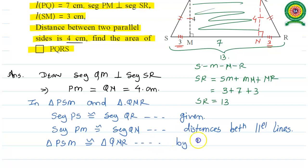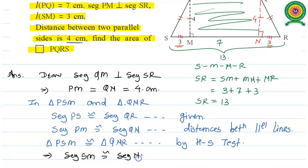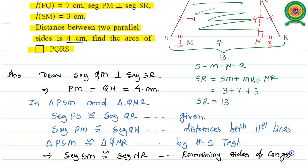Hence, by using the Hypotenuse-Side test, the given two triangles PSM and QNR are congruent. Once the triangles are congruent, remaining pairs of sides and angles are congruent. So segment SM is congruent to segment NR. The reason is: congruent sides of congruent triangles.